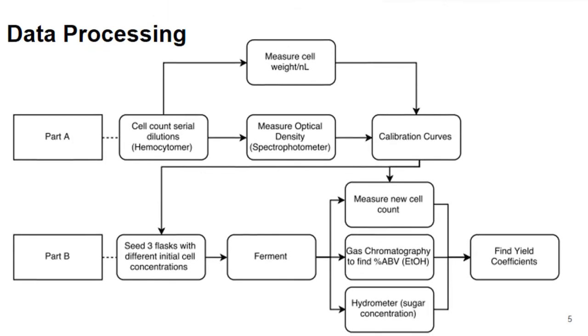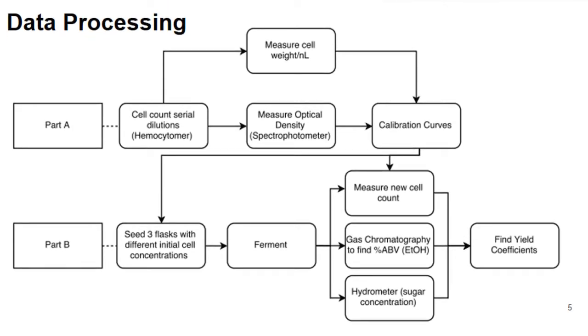To go deeper into how we're processing this data, this experiment involved three parts. In part A, we used our hemocytometer to determine standard curves. We also found the dry weight of the cells after drying them. With that information and the optical density from our spectrophotometer, we were able to figure out the calibration curves that allow us to correlate absorbance to concentration.